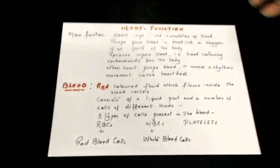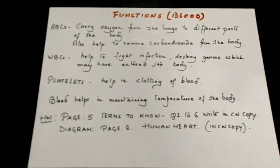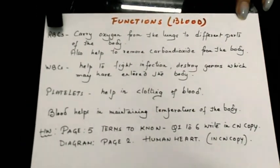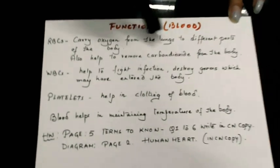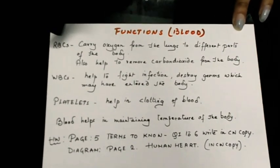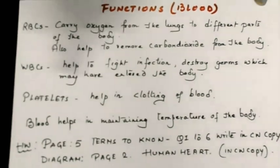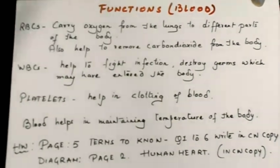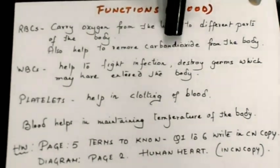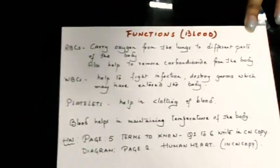Now let's look at the functions of blood. Red blood cells carry oxygen from the lungs to different parts of the body. RBCs also help to remove carbon dioxide from the body — so they do both of these jobs simultaneously.